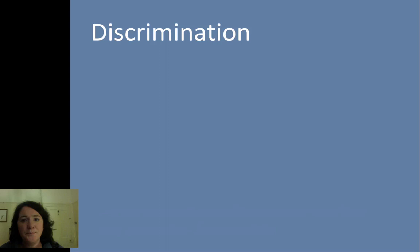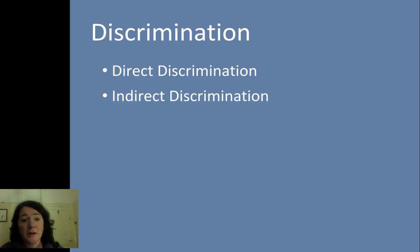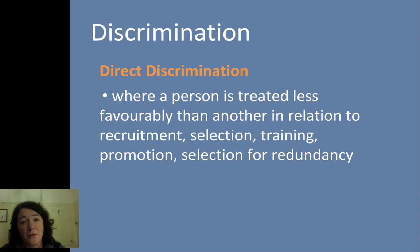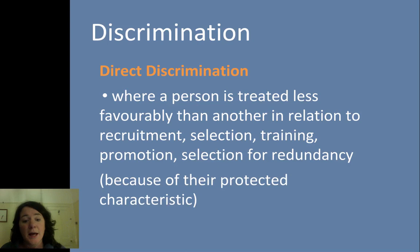In terms of discrimination, we're going to look at two particular types: direct and indirect. We're also going to look at what harassment and victimisation are. Direct discrimination is where a person is treated less favourably than others in relation to things like recruitment or selection — so when people are applying for jobs — things like training and promotion when people are already in jobs, or at times selection for redundancy when a company might need to lay off staff. Direct discrimination means treating a person less favourably because of one of those characteristics in the protected characteristics list.